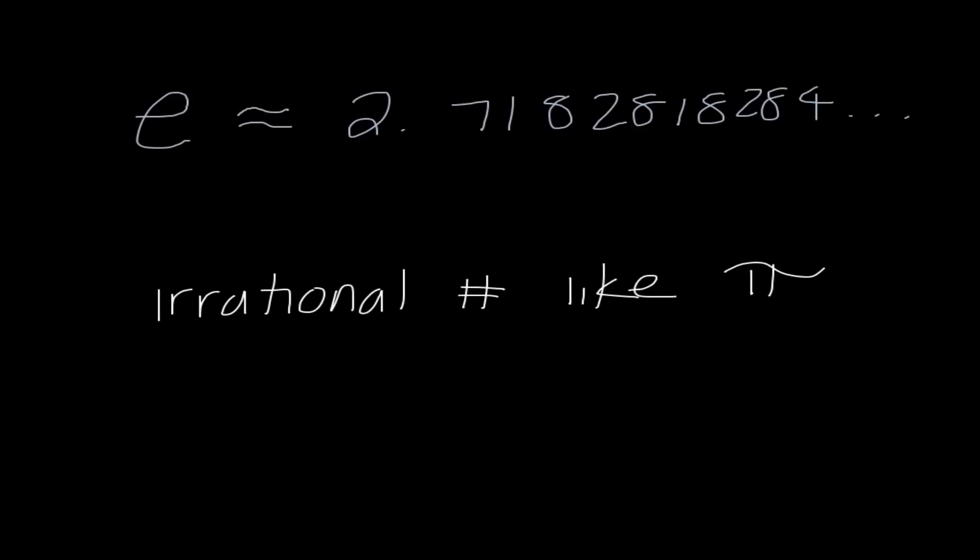And we equate this number to kind of like pi because it is irrational like pi. Irrational, remember, means that we cannot write it as a fraction of integers. These decimals do not repeat. They do not end. It goes on forever.